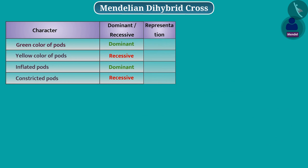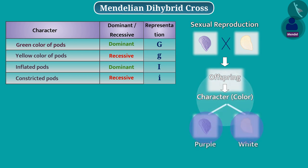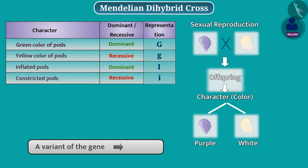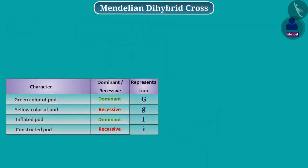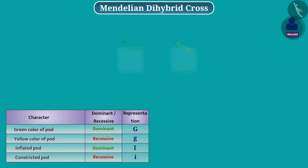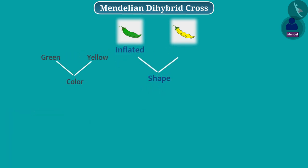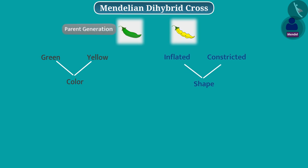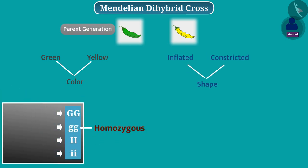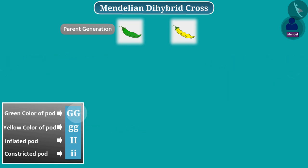We represent dominant characters by capital letters and recessive characters by small letters. We know that offspring produced by sexual reproduction has two options for each character — a variant of the gene is called allele. Here, there are two forms of pod color, green and yellow, and two forms of pod shape, inflated and constricted. Parents of F1 generation are homozygous for color and shape of the pod, so they have the same allele for each character.